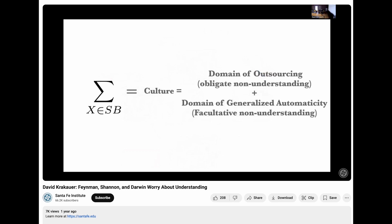There's two kinds of culture. There's the outsourced culture, which I'm going to call the obligate non-understanding. So when I use Google Maps, I don't know where I am.